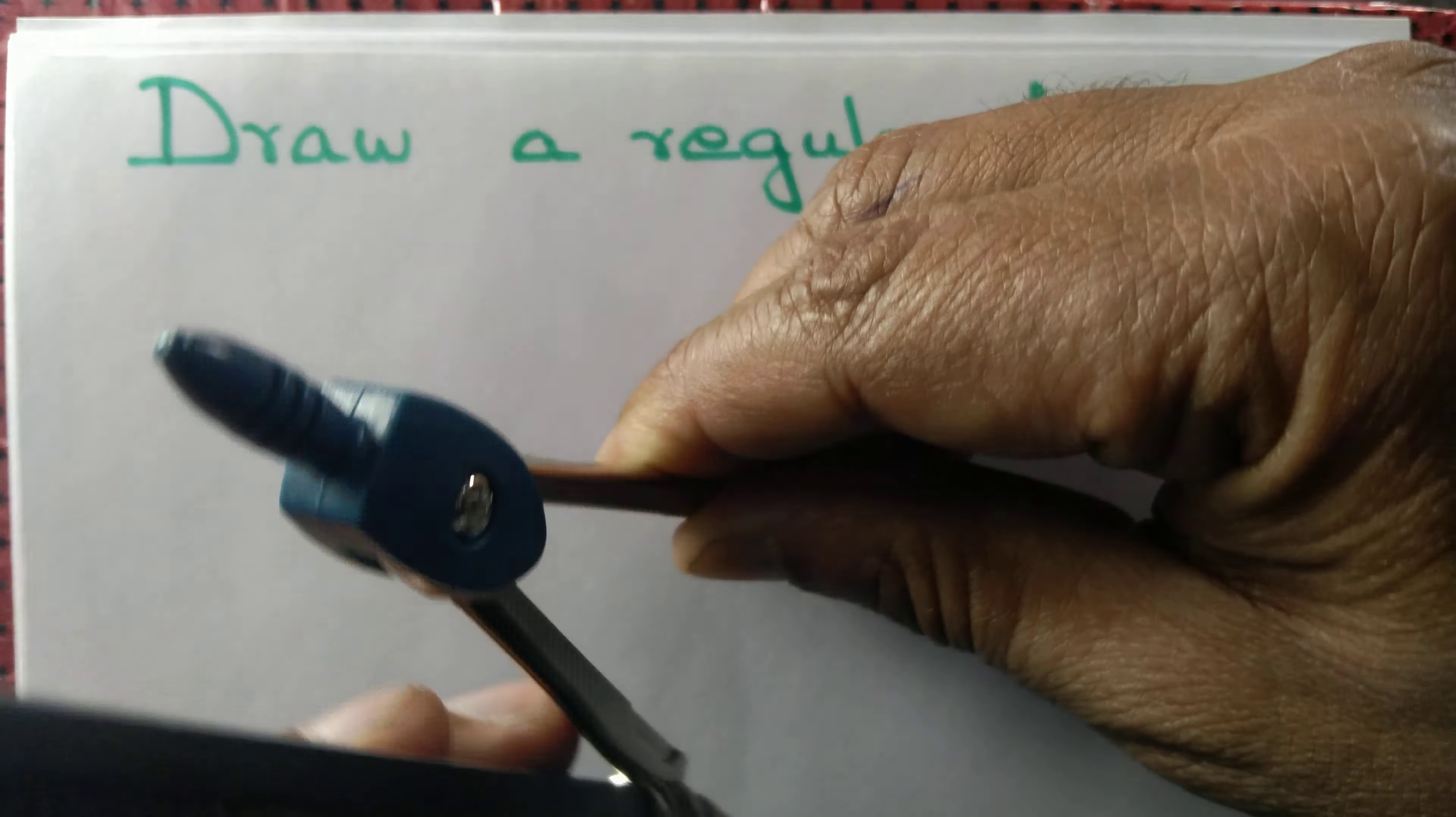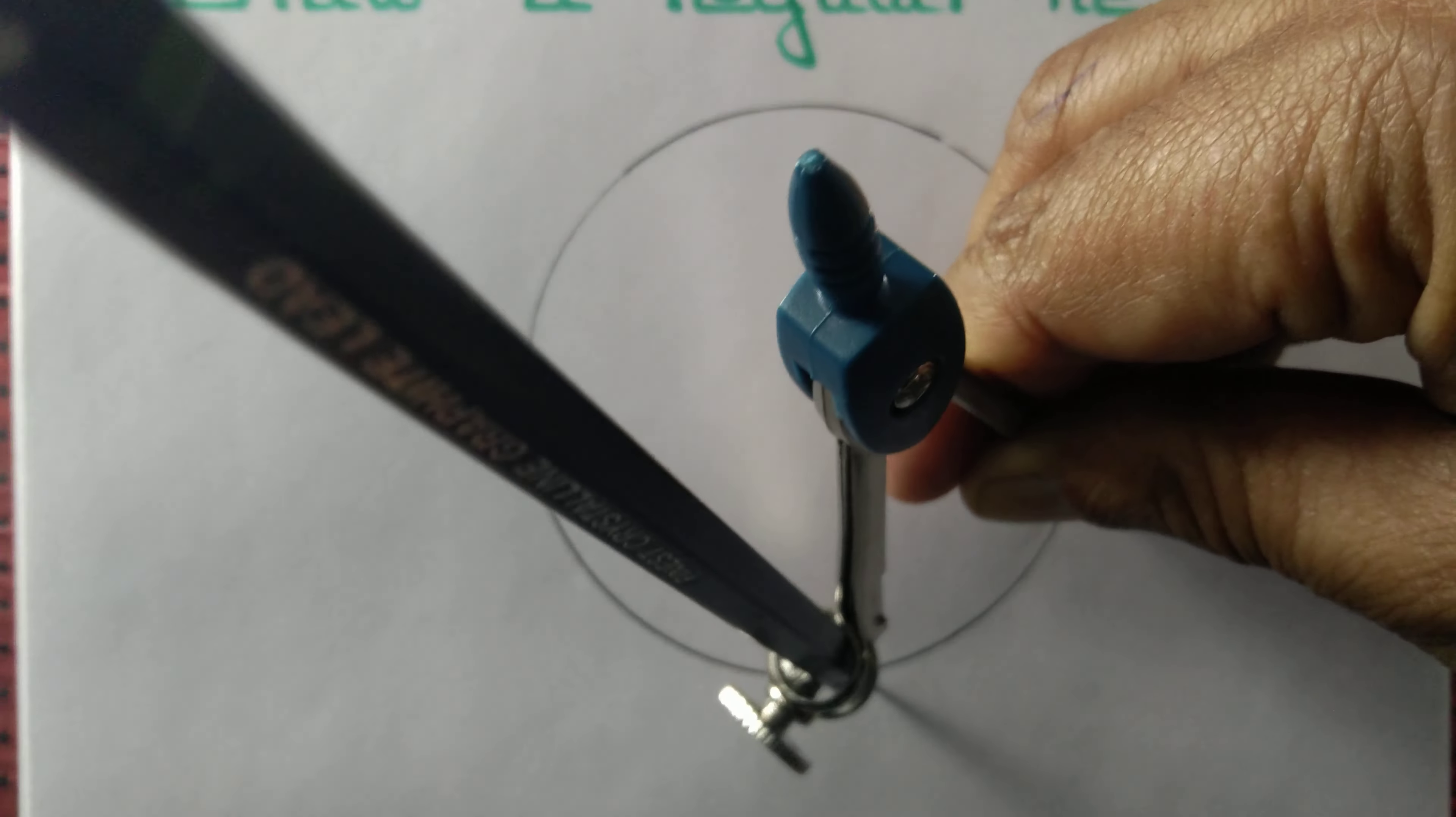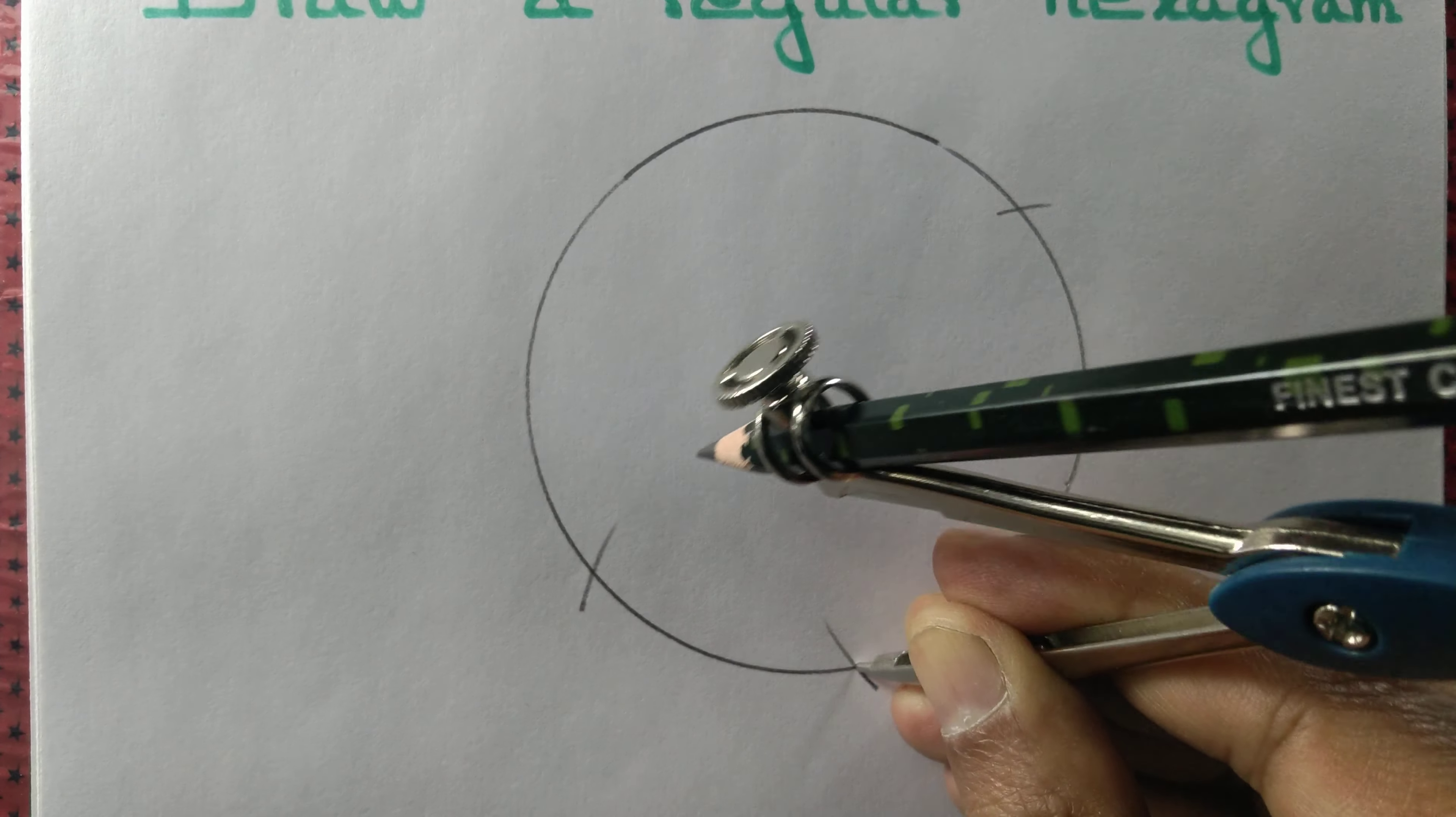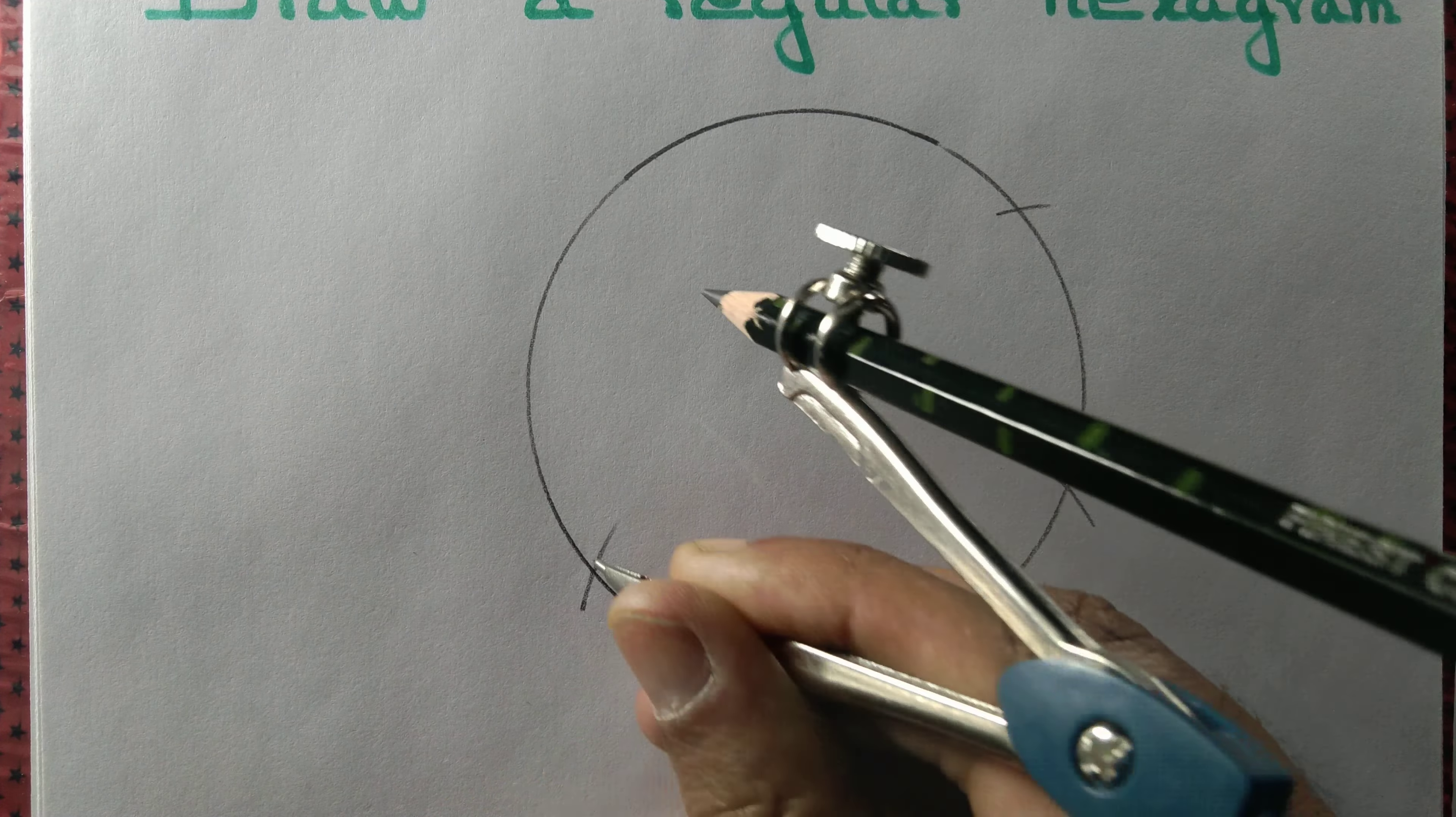Without changing the radius of the compass, we draw several arcs that intersect the given circle.